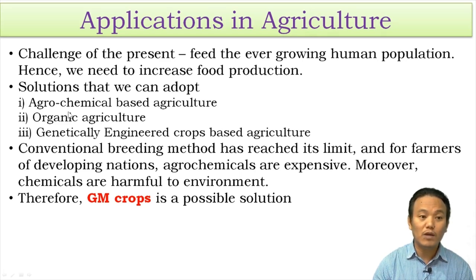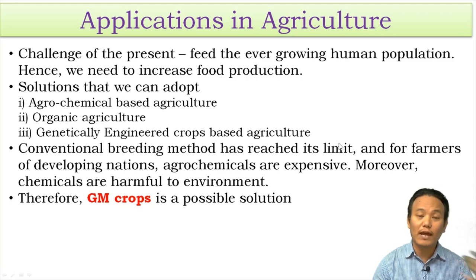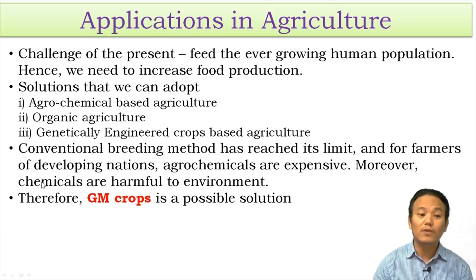The first two approaches have certain limitations. The conventional breeding method — hybridization — has reached its limits; we no longer have enough wild varieties available to create better hybrids. For farmers in developing nations like India, agrochemicals such as fertilizers and pesticides are very expensive and unaffordable. And even when farmers can afford them, these chemicals are harmful to the environment.